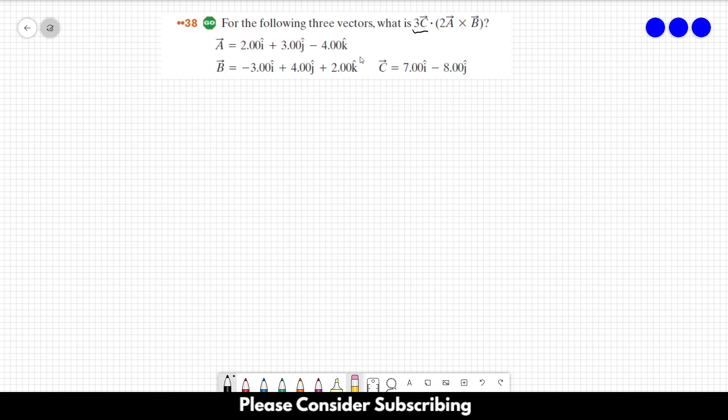So let us first calculate 3 times vector C, and this is equal to 21 in the J direction minus 24 in the J direction. So this is vector 3 times C.